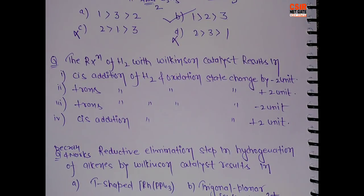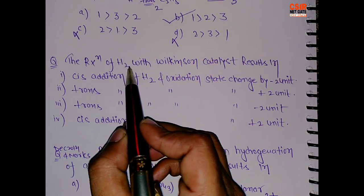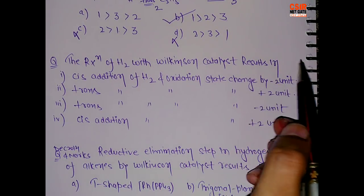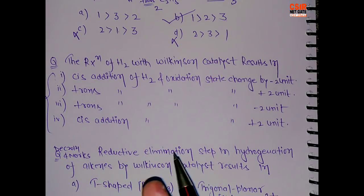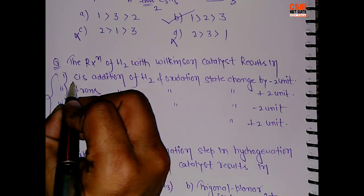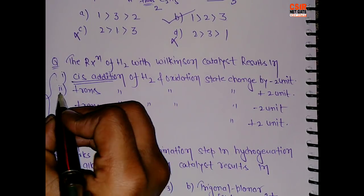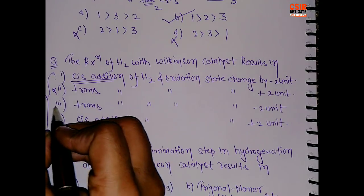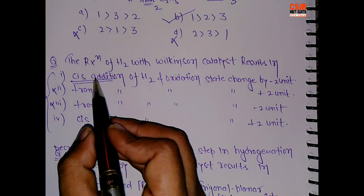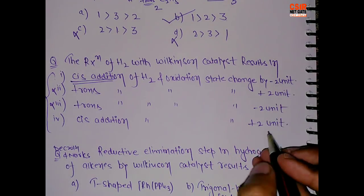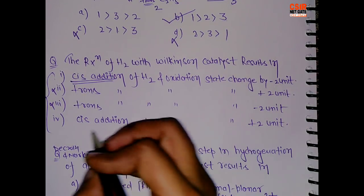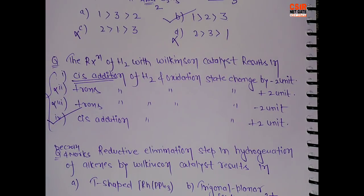Now come to the next question. The reaction of H2 with Wilkinson catalyst results in - and again there are 4 options, they might confuse you, but I have already told you that the addition is cis, cis addition. So this second option cancels out and this third option cancels out. Cis addition, and the oxidation state changes by minus 2 units, and here we have plus 2 units. So option 4 is correct.